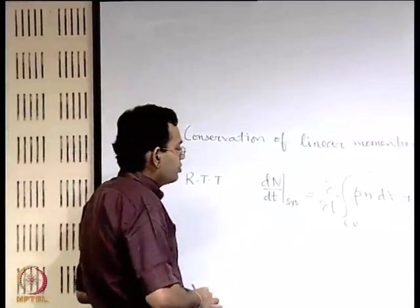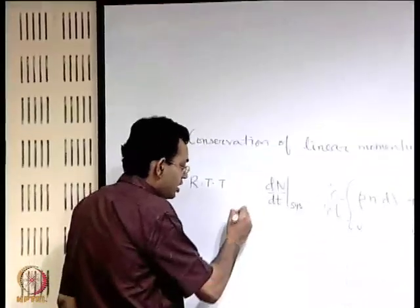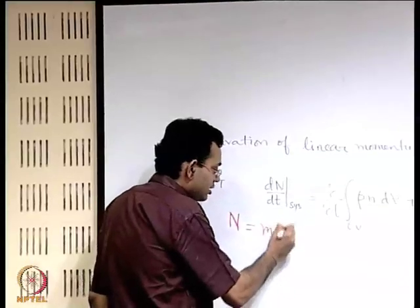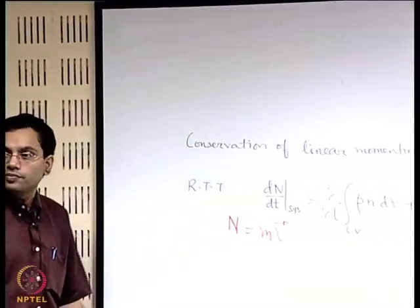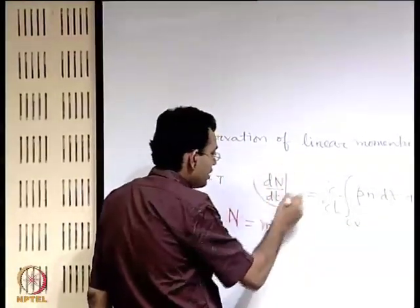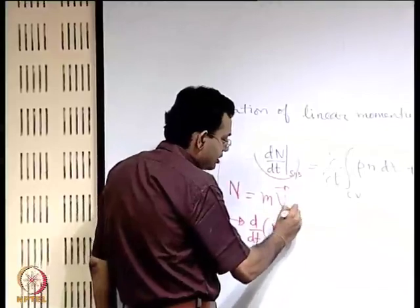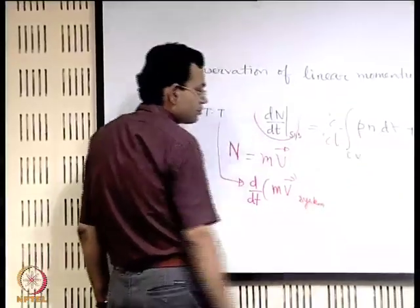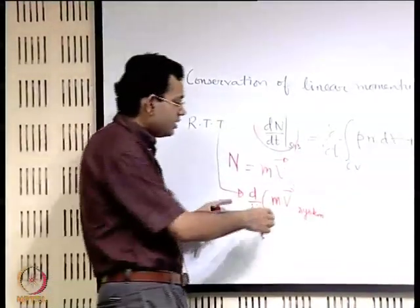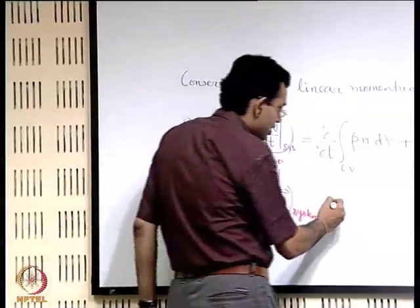Now if we want to conserve the linear momentum, then what should be N? Capital N is the mass into the velocity, that is the linear momentum. So we can write the left hand side as d/dt of mv of the system. When we write d/dt of mv for the system, by Newton's second law of motion, this is the resultant force acting on the system.